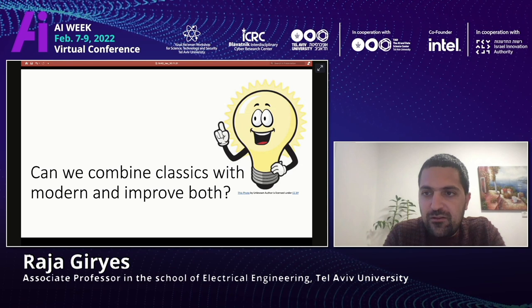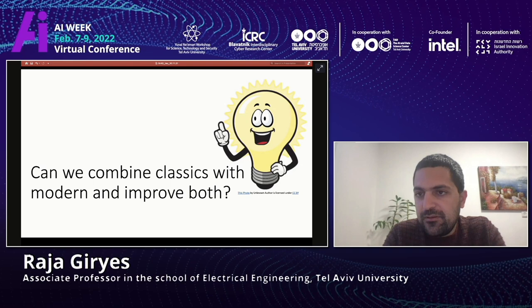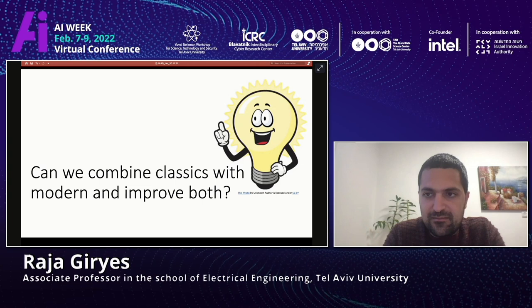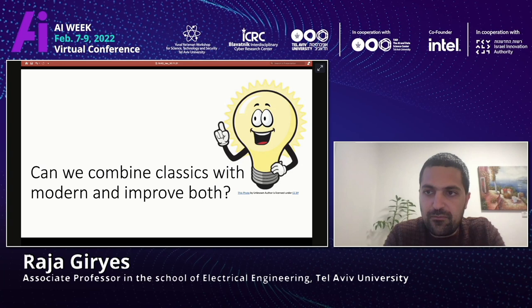Yesterday my PhD student Shadia Hussein gave a talk about how we can use generalized sampling to improve signal and image super resolution, which is one example of how we can use classic techniques to improve deep learning. Here I will show other examples from research done in my lab in collaboration with others, showing that classic techniques are not dead but can improve our usage of deep learning in many domains.